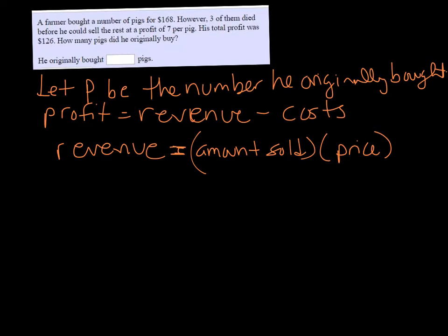So in this scenario, he paid $168 for all of the pigs, so if we wanted to know how much each pig cost, then the cost of one pig would be $168 divided by P.